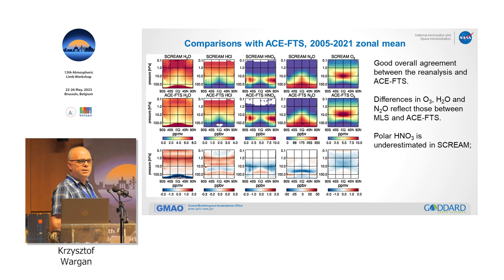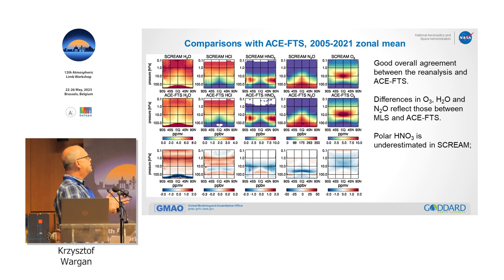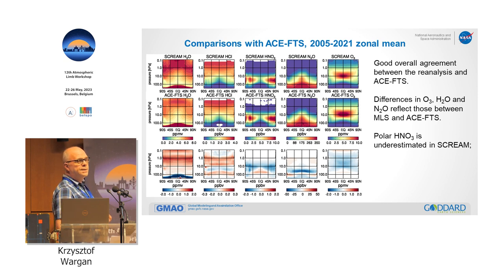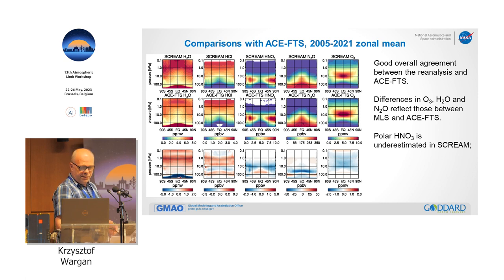We have done extensive validation of this product. This is a snapshot showing comparisons with ACE-FTS of all five species for the entire period, just zonal mean. The top two rows show SCREAM — the field morphology is the same as you would expect, nothing particularly surprising. The differences are exactly what you would expect from known differences between ACE-FTS and MLS, going for water vapor and other species including ozone.